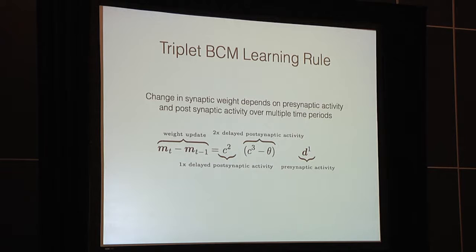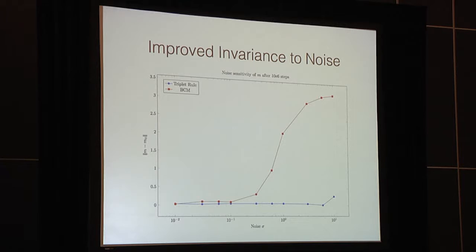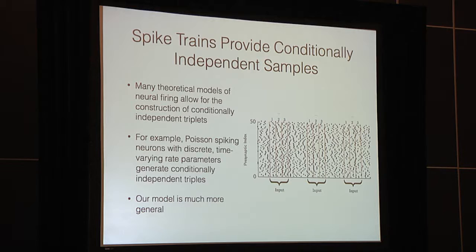Taking a closer look at what this learning rule actually looks like: as with the classical Hebbian rule, the synaptic weights move in the direction of the presynaptic input, scaled now by the postsynaptic activity at two disjoint time periods. This has massively improved invariance to noise — as you increase the variance of these Gaussians, the stable points don't actually move. The question is where we can get these independent triplets in natural data. If you look at a fixed object, your retina produces a chain of spikes; you then fixate on another object and get another chain of spikes — you get multiple samples over the entire time period of viewing that depend on a single input, the object you are staring at.